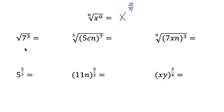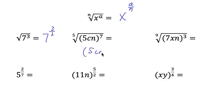The square root of 7 to the 3rd power — this is really the 2nd root — so this is 7 to the 3 halves power. It's the square root, or 2nd root, and it's raised to the 3rd power. Here we have the 5th root and the 7th power, so we have 5cn raised to the 7 5ths power, where the exponent is in the numerator and the root is in the denominator.